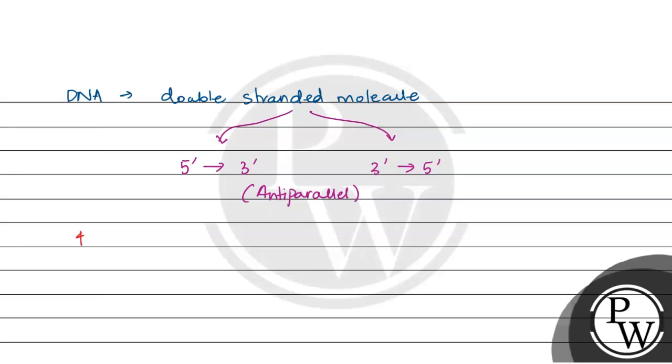In DNA, basically four nitrogenous bases are present. The first one is adenine, the second one is guanine. Adenine makes two hydrogen bonds with thymine, and guanine makes three hydrogen bonds with cytosine. These two are purines and these two are pyrimidines.